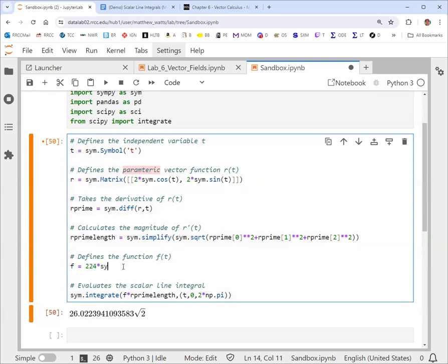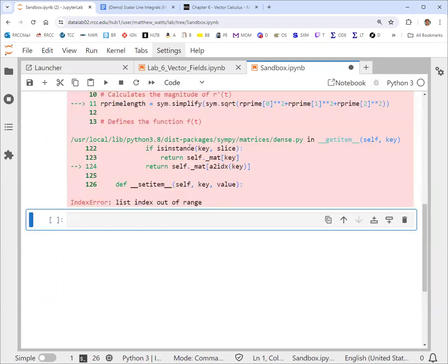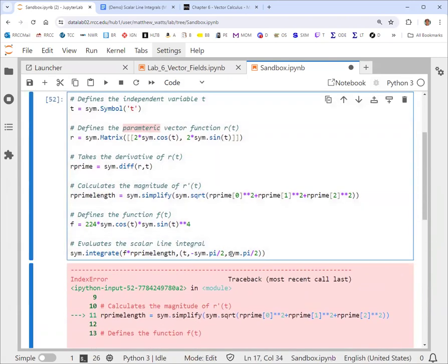It's already set up to be defined in terms of t here. So you could have Python doing that for you to avoid some mistakes. But remember, we found this to be 224 times cosine times sine to the fourth. And then you can see that I multiply by the magnitude of r prime in the integration there. And then we need to integrate from negative pi over 2 to pi over 2. So I had this set up for a three component r function, so we need to get rid of that right there.